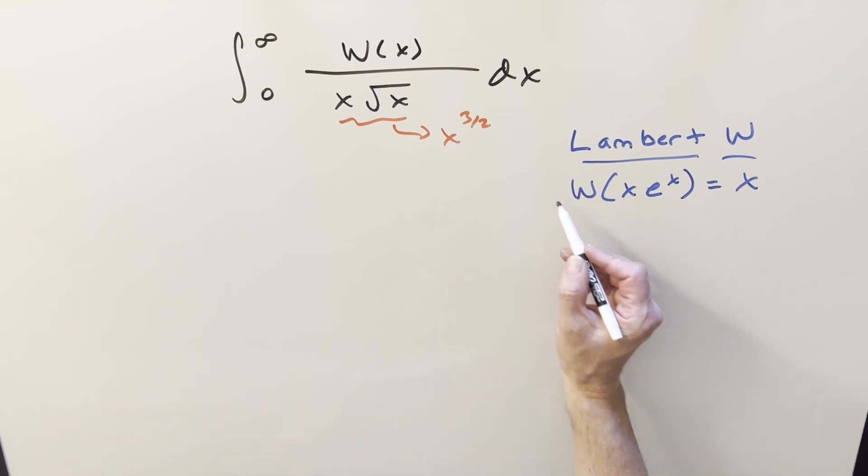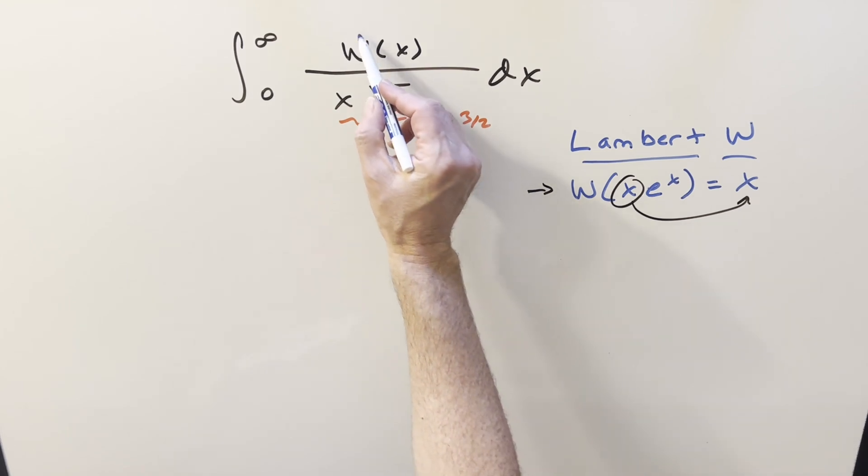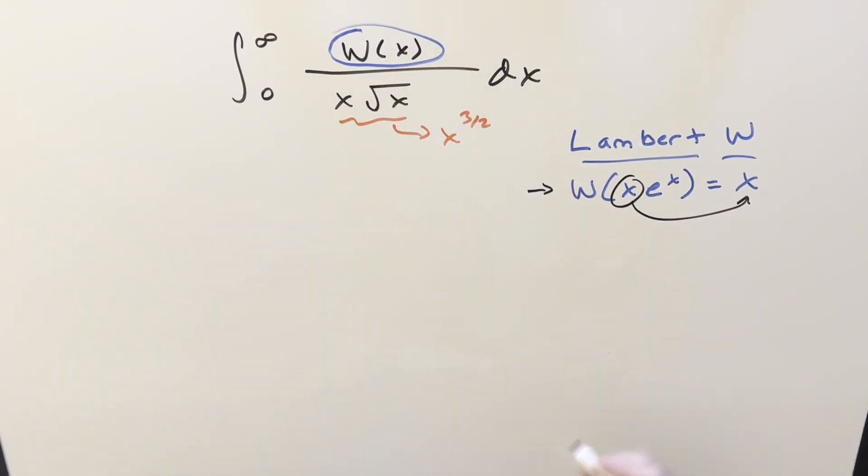For this one, we really just need this one formula here. We know that if we've got something in this form, Lambert W of x e to the x, we just get back the input, this x. This doesn't just have to be a single variable, but we just get back the x. So the real problem is how do we deal with Lambert W inside of an integral? Well, the way I want to do it is with just a u substitution.